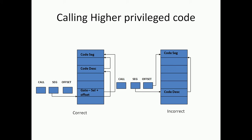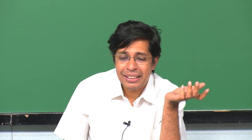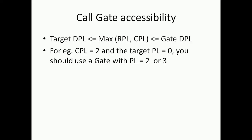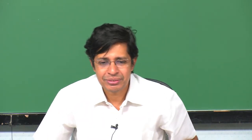The target DPL should be less than or equal to max(RPL, CPL), which should be less than or equal to the gate DPL. You can only go through a call gate to a descriptor privilege level that is less than or equal to max(RPL, CPL). And to do so, you go through a gate whose DPL is larger than or equal to yours. For example, if CPL equals 2 and target PL equals 0, you should use a gate with PL equal to 2 or 3. If you use PL equal to 1, the gate will not allow you. You cannot use a call gate to go to a higher privilege level.